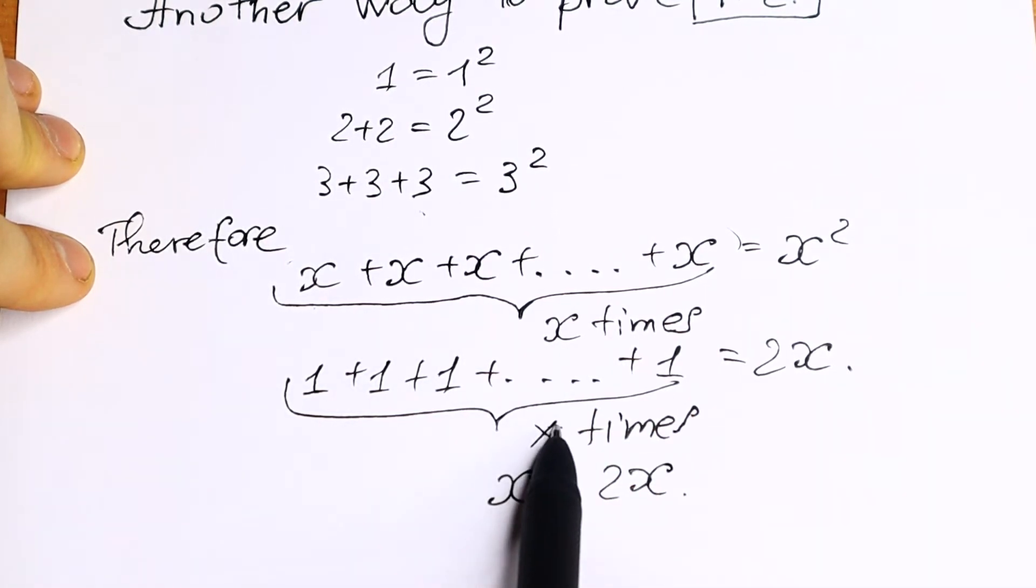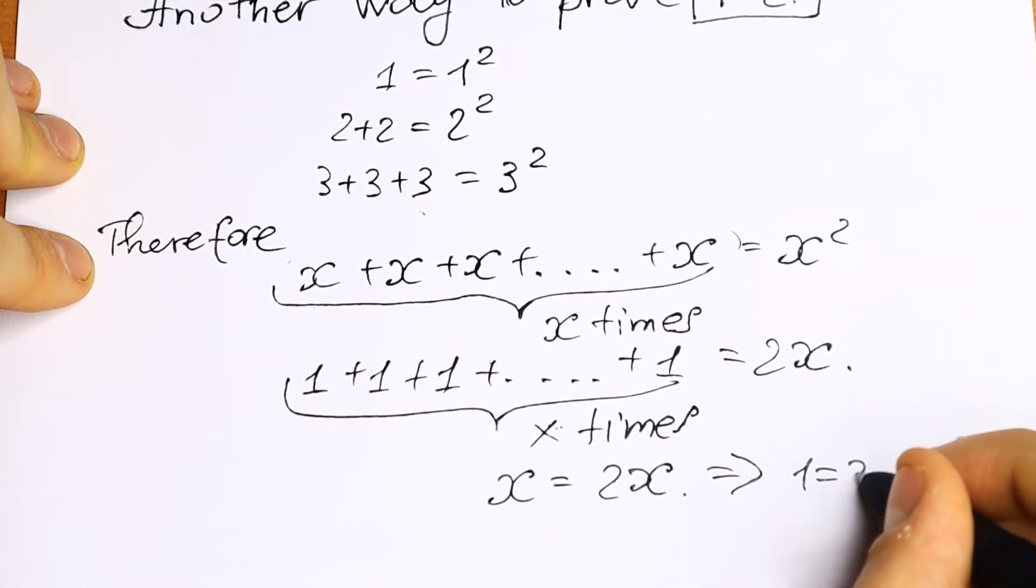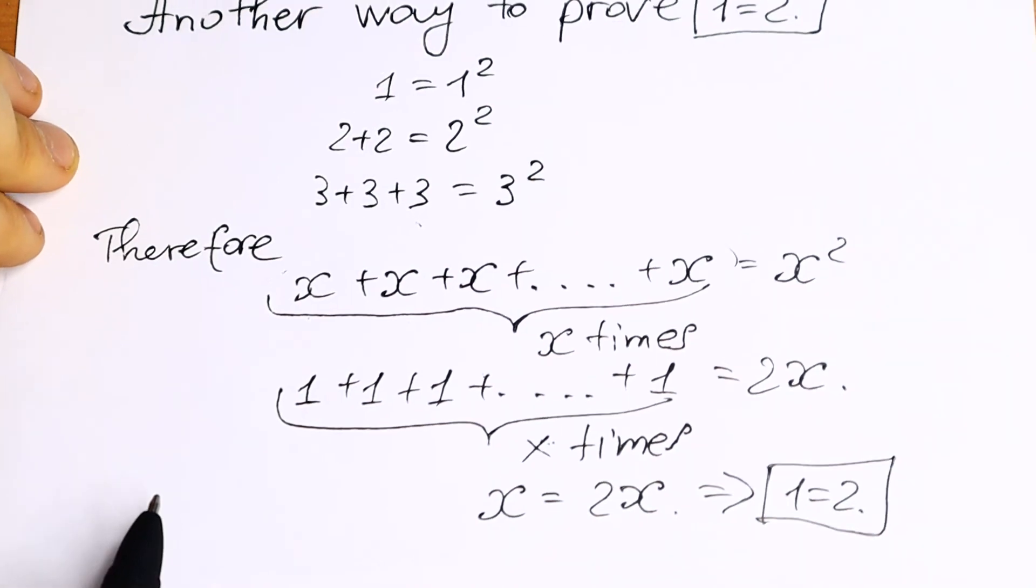Which we can simplify this at x equal to 2x. Because right here we will have x times. And if we divide both sides by x we will have that 1 equal to 2. What do you think about this method?